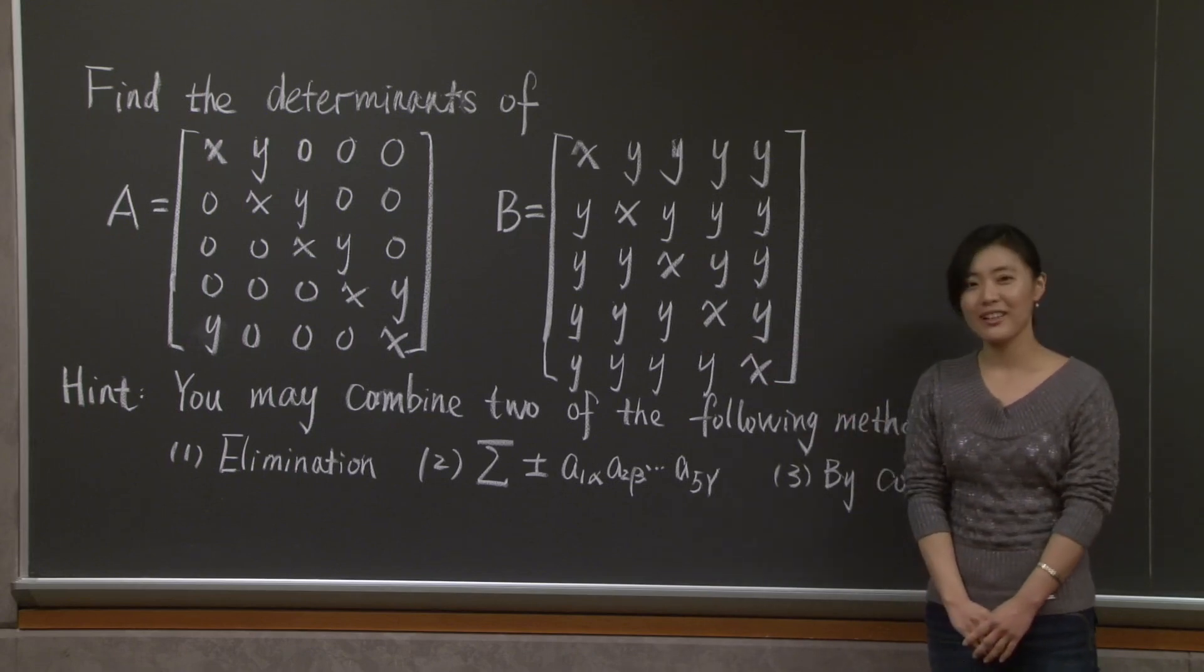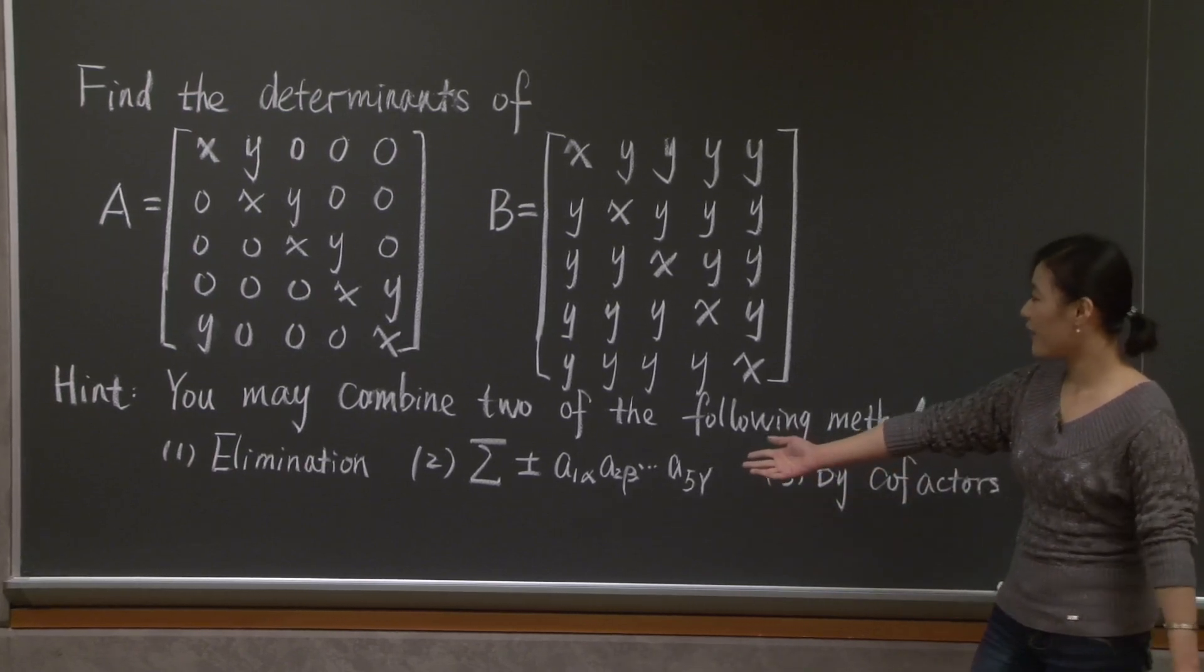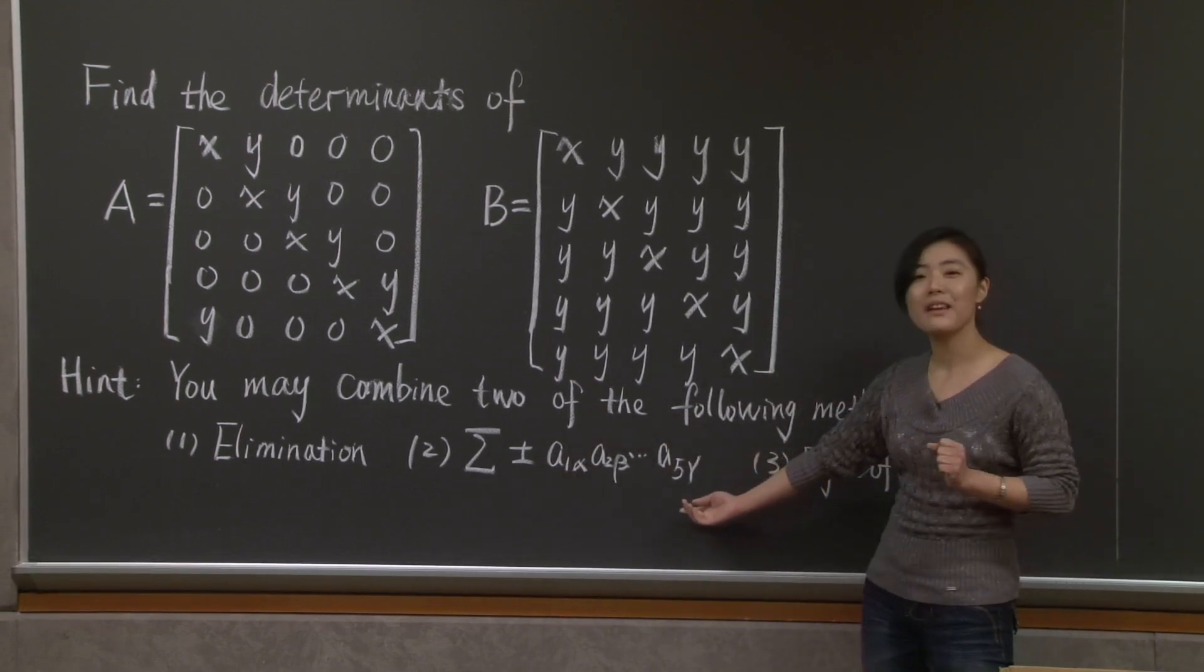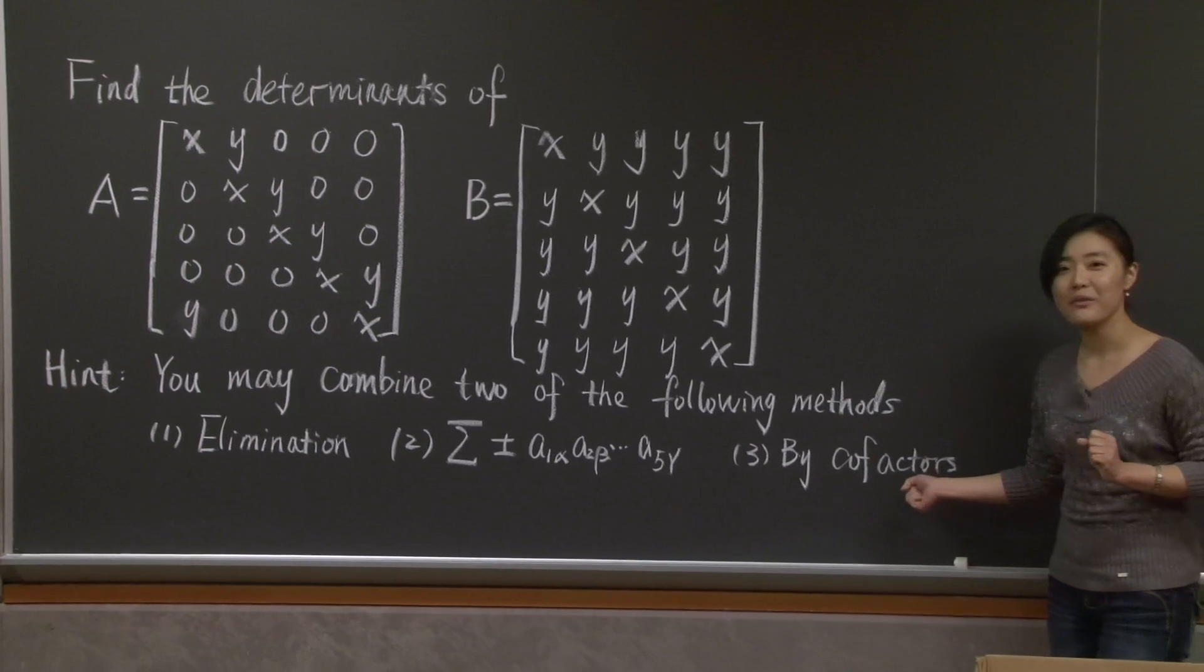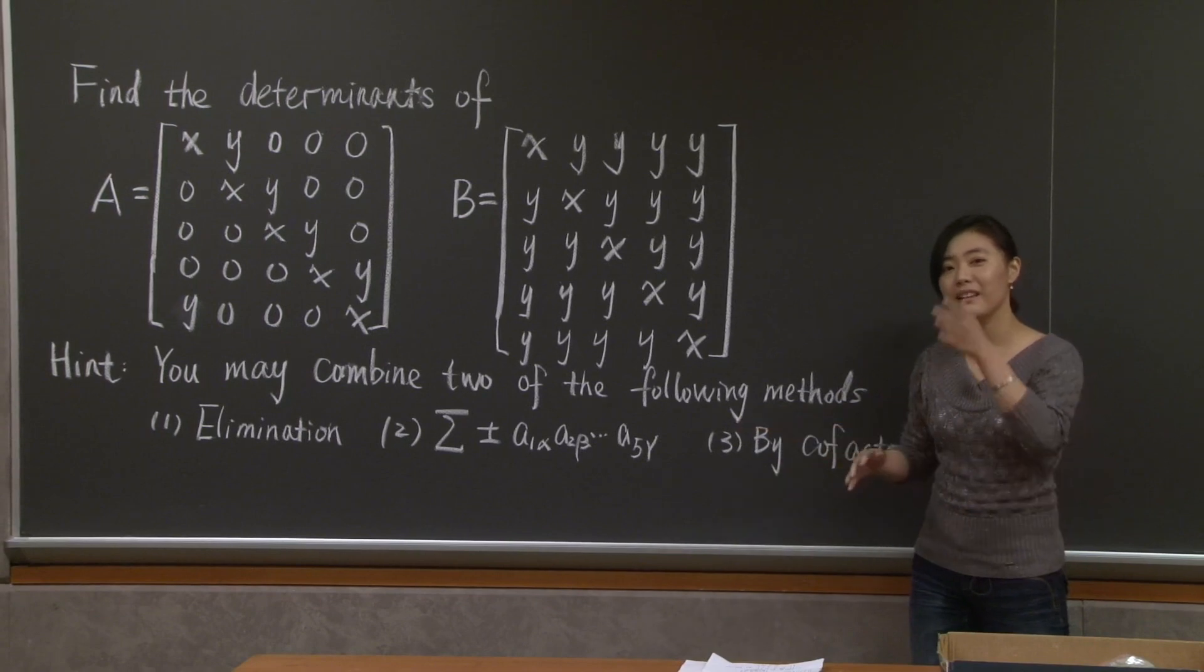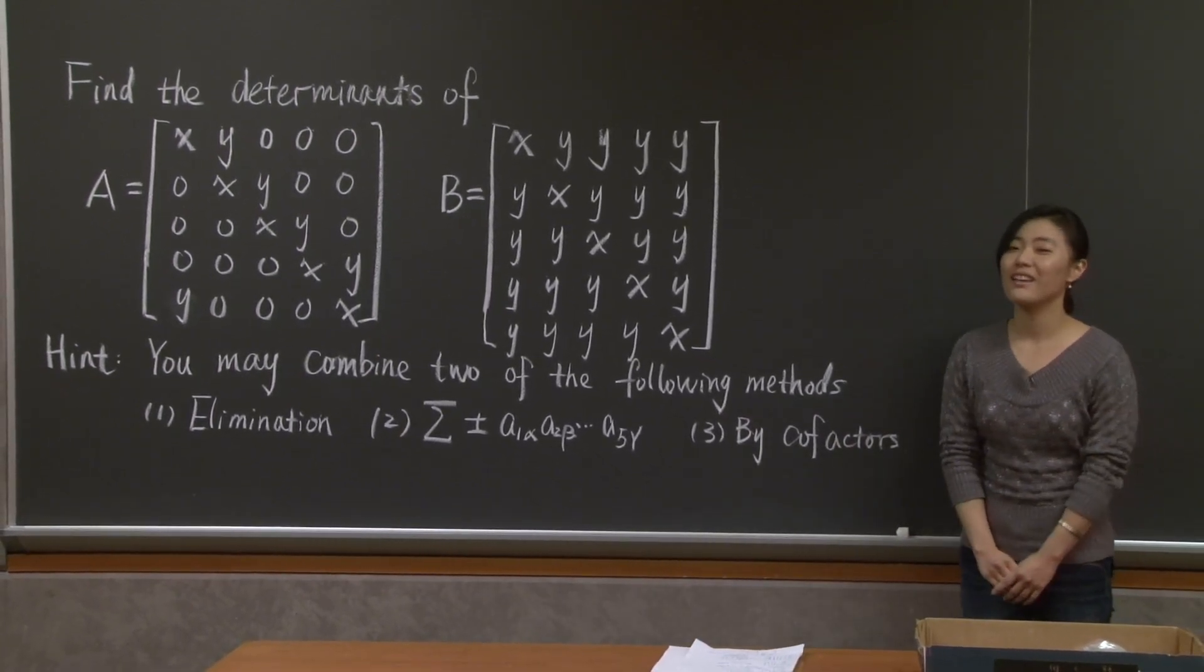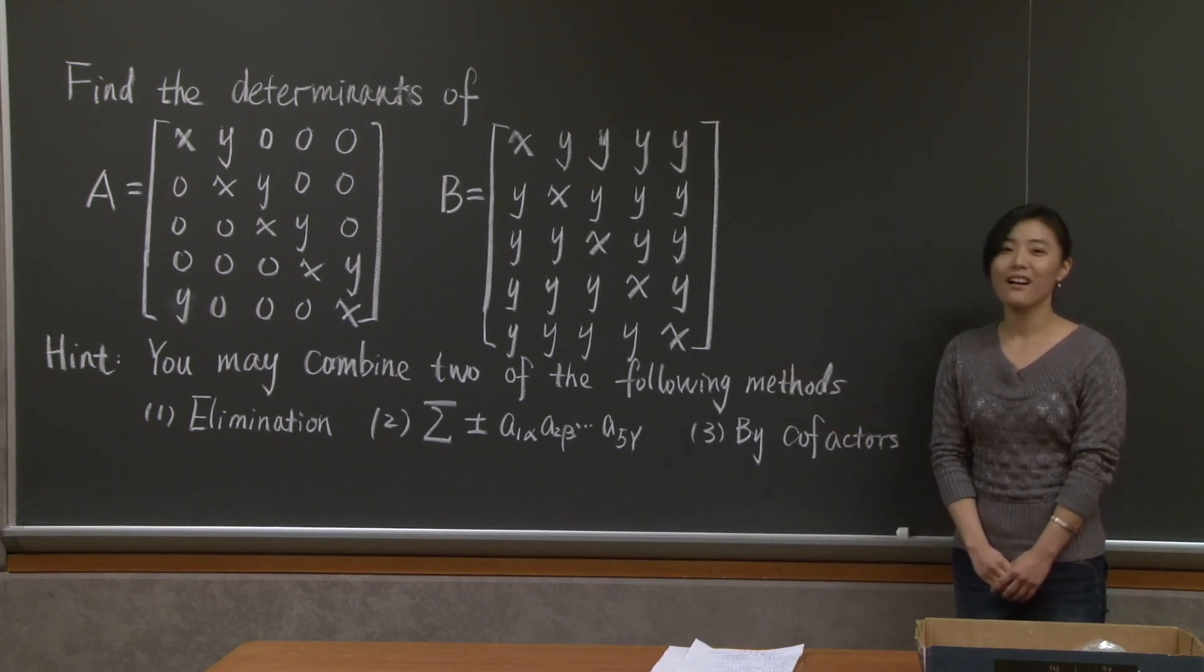Before starting, let me help you review what you can do to compute determinants. Of course, you can carry out elimination to transform your original matrix into upper triangular matrix. Or you can use this big summation formula. Another choice would be you can do it by cofactors. Namely, you can expand your original matrix along any row or any column, and then the determinant is simply given by the dot product of that row or that column with its cofactors. Why don't you pause the video now and try to work on them yourself. Whenever you're ready, I'll come back and show you my way.